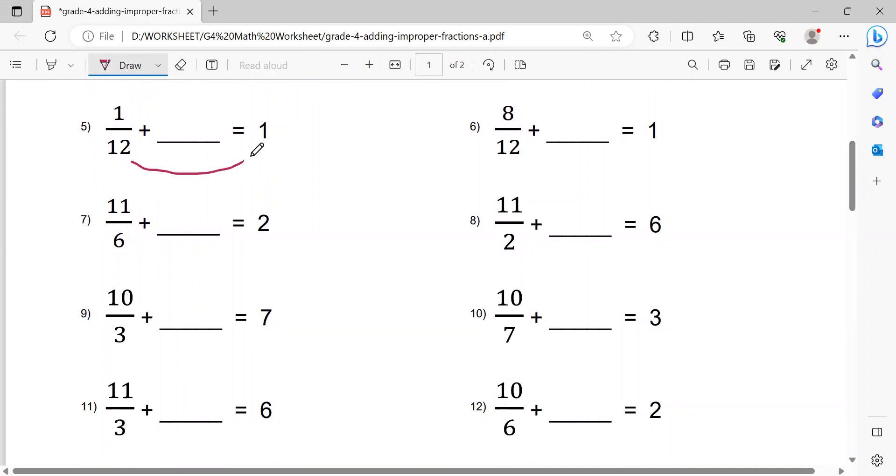12 times 1 equals 12, minus 1 equals 11. So 11 over 12, that's the solution. Number 6. 12 times 1 equals 12 minus 8 equals 4. 4 over 12.